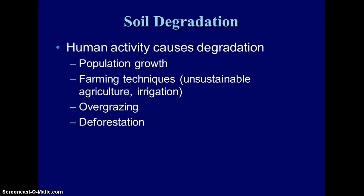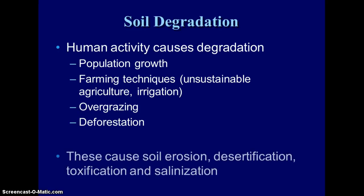Deforestation — when we remove trees to clear land for more crops — is another cause. Any time you remove vegetation, that's going to increase soil erosion and can increase desertification. Also, when you don't have plants there to absorb nutrients, you end up with more toxic soils. Irrigation can do that too if you have contaminated groundwater.